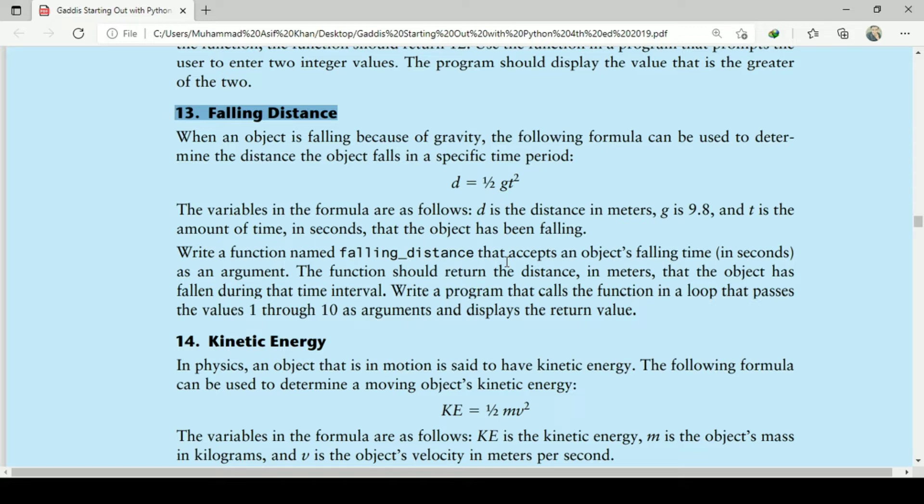In this program I will define a function named falling_distance that will calculate the distance of a falling object by the formula d equals one-half g t squared, where d is the distance in meters, g is 9.8, and t is the time in seconds.